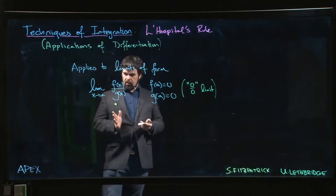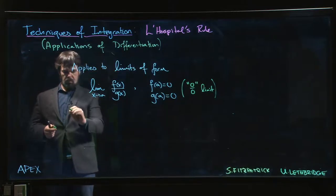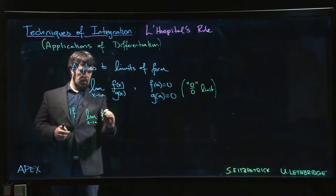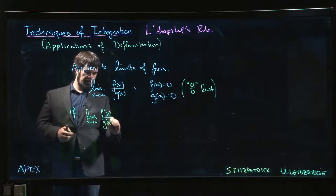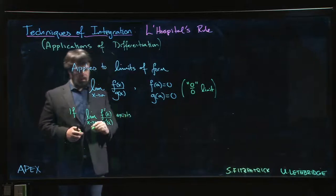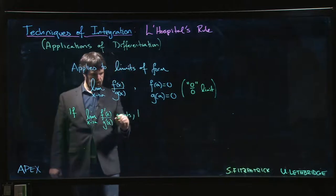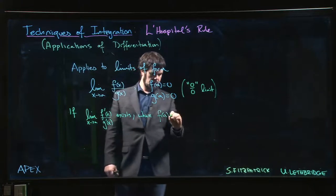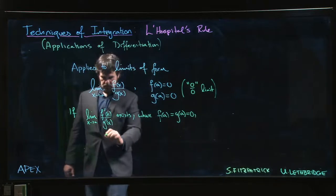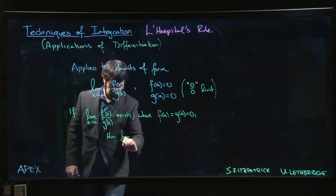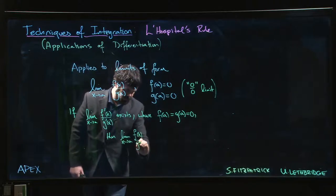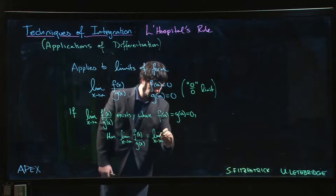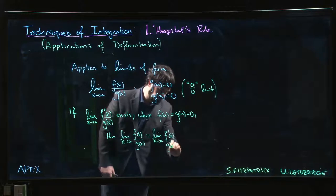So how does it work? What does L'Hopital's rule say? L'Hopital's rule says the following: where f(a) and g(a) are both zero, if the limit as x approaches a of f'(x) over g'(x) exists, then the limit as x approaches a of f(x) over g(x) will be equal to the limit as x approaches a of f'(x) over g'(x).